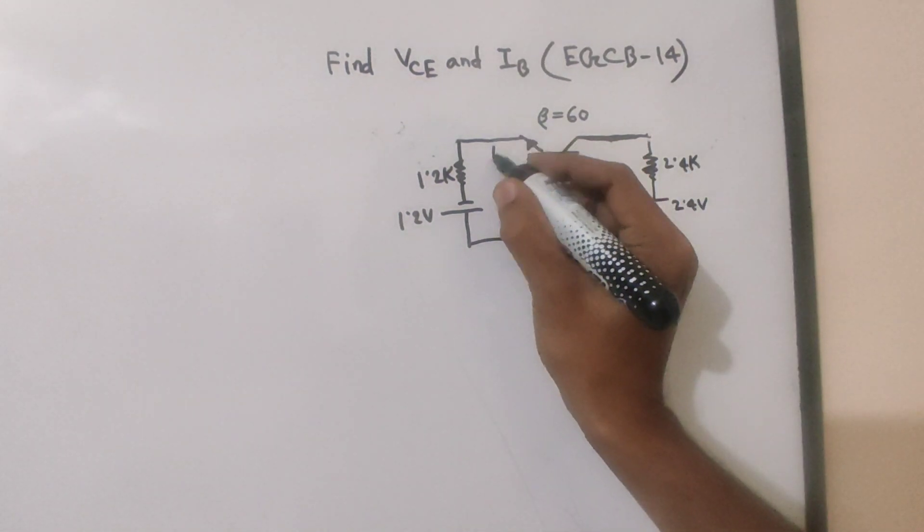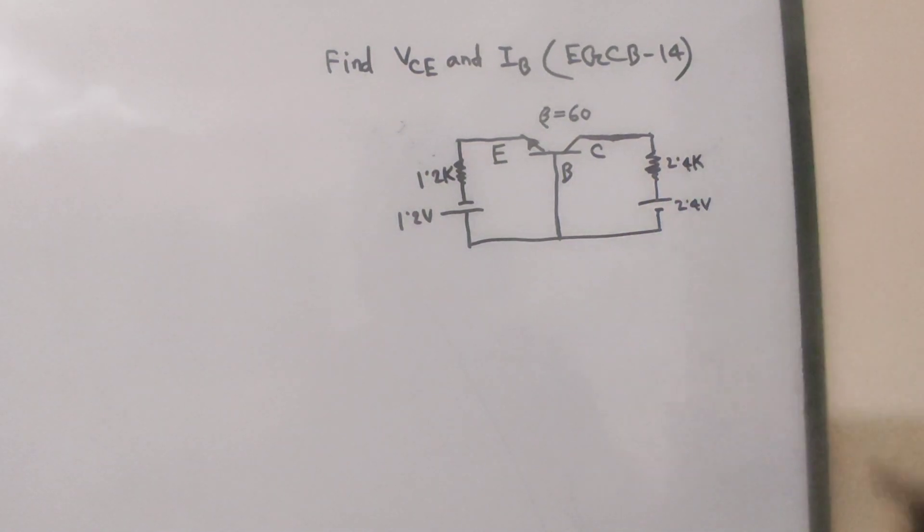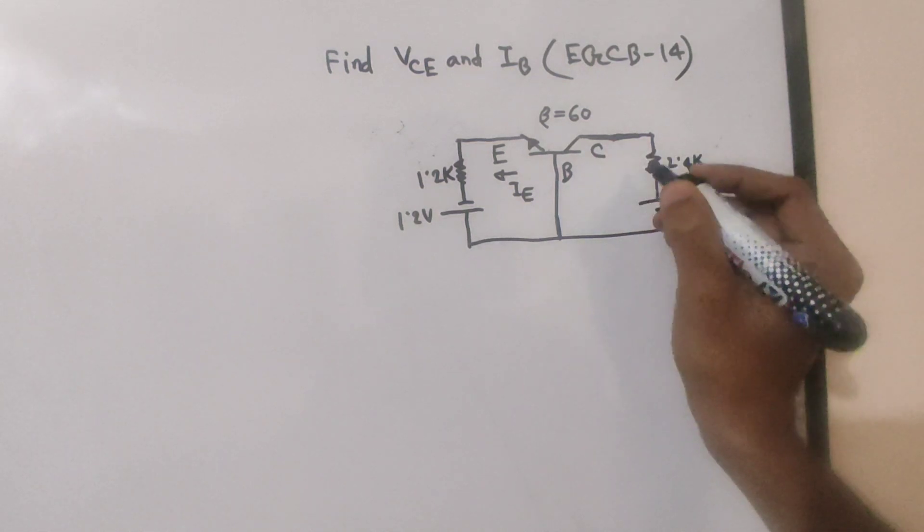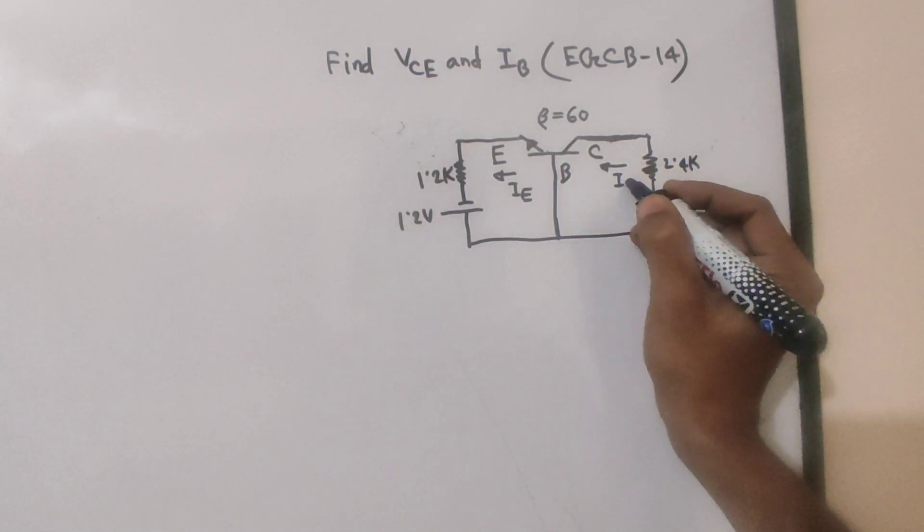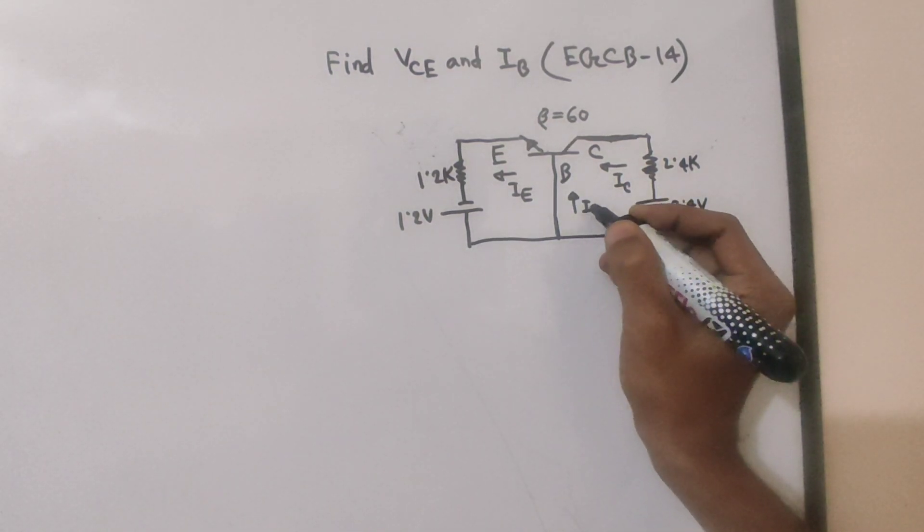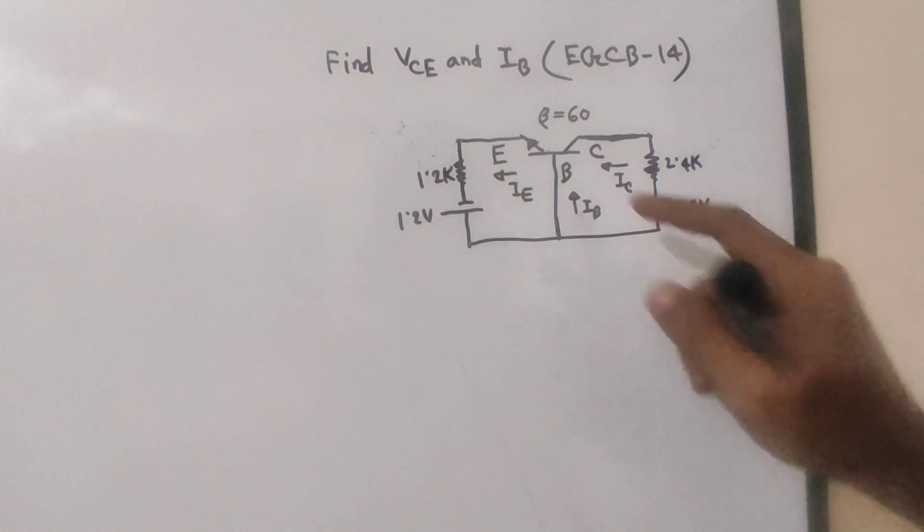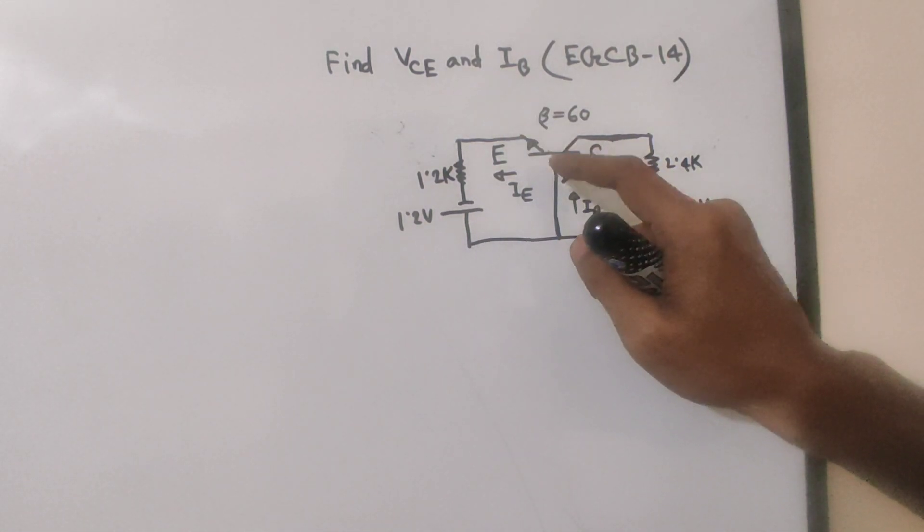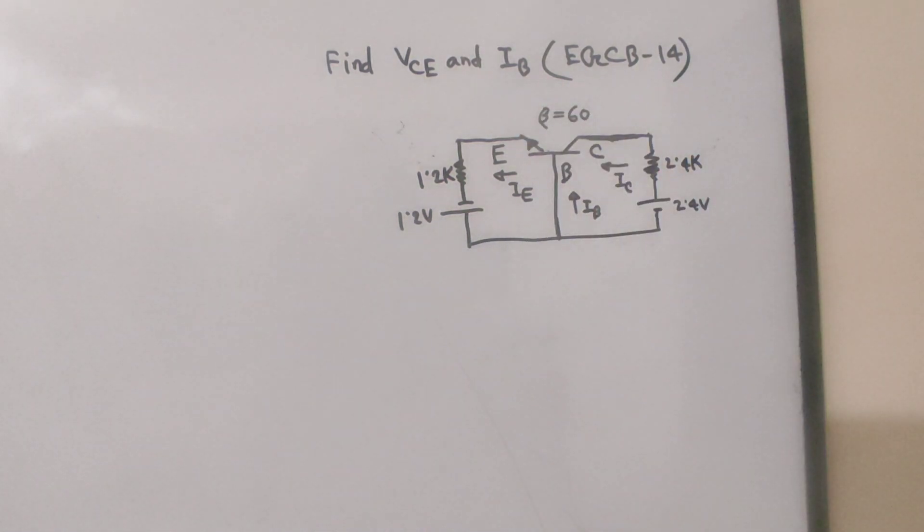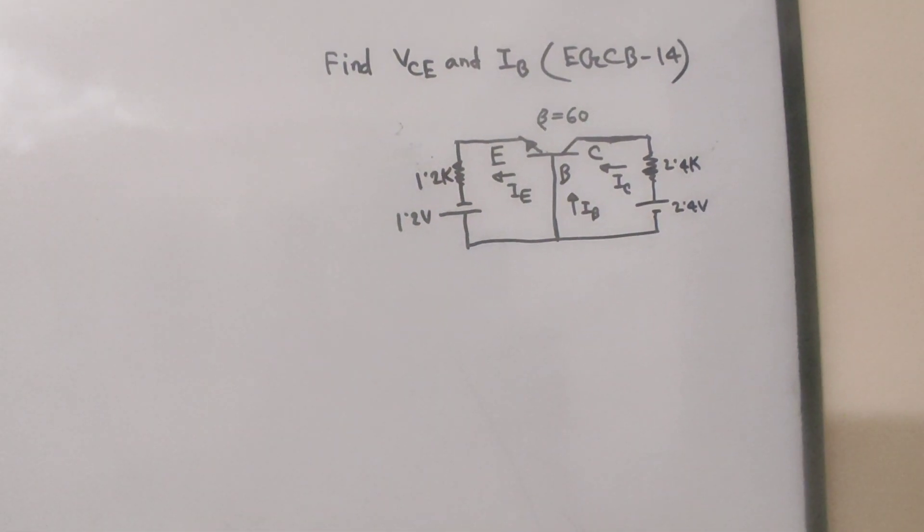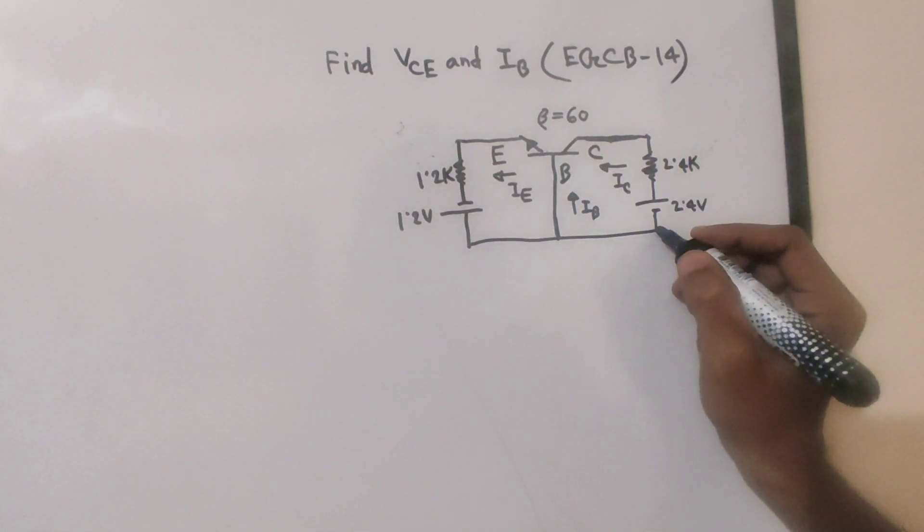To find the emitter current and collector current, we need to understand the current relationships. The collector current and emitter current follow the equation IV plus IC. For the NPN transistor, we take the current as positive to negative. The NPN transistor problem can be solved in active mode. We'll do the calculation first and then verify.